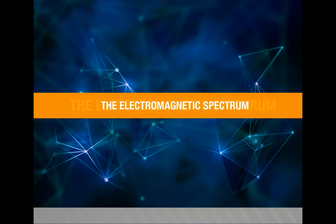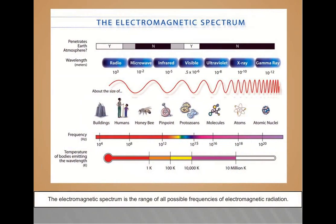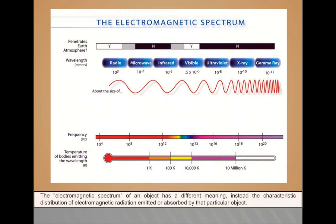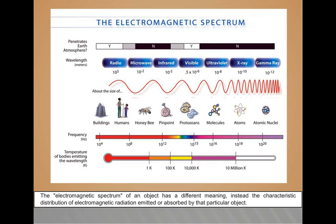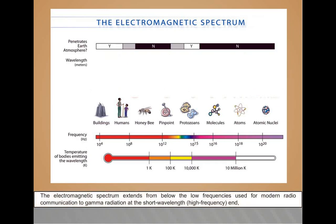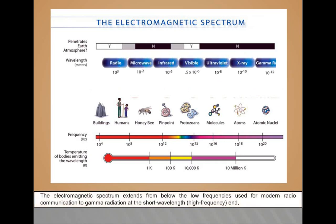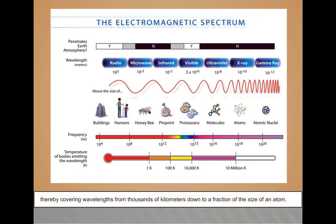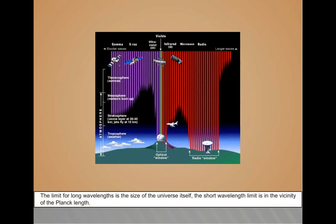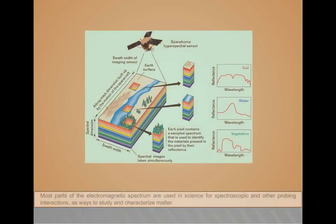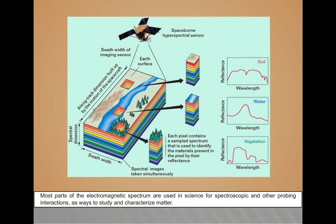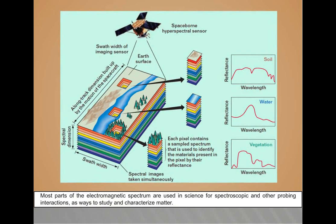The electromagnetic spectrum is the range of all possible frequencies of electromagnetic radiation. The electromagnetic spectrum of an object has a different meaning - instead, the characteristic distribution of electromagnetic radiation emitted or absorbed by that particular object. The electromagnetic spectrum extends from below the low frequencies used for modern radio communication to gamma radiation at the short wavelength, high frequency end, thereby covering wavelengths from thousands of kilometers down to a fraction of the size of an atom. The limit for long wavelengths is the size of the universe itself. The short wavelength limit is in the vicinity of the Planck length. Most parts of the electromagnetic spectrum are used in science for spectroscopic and other probing interactions as ways to study and characterize matter.